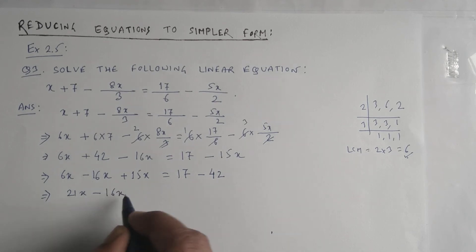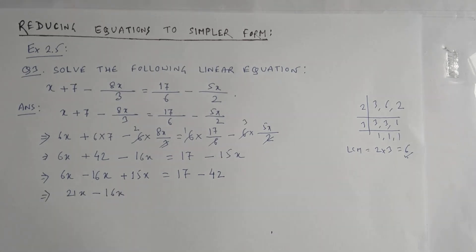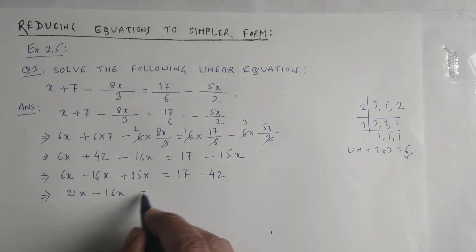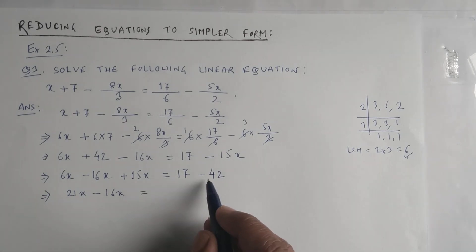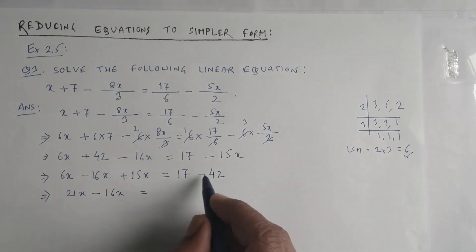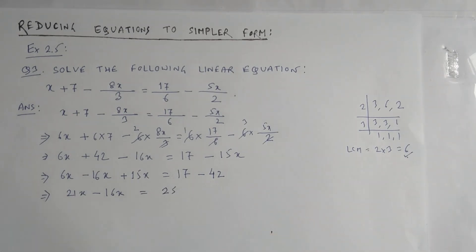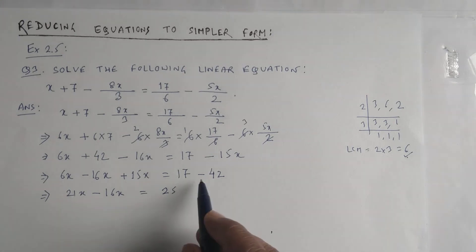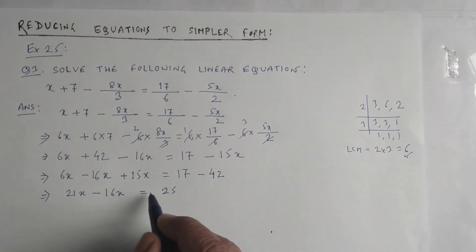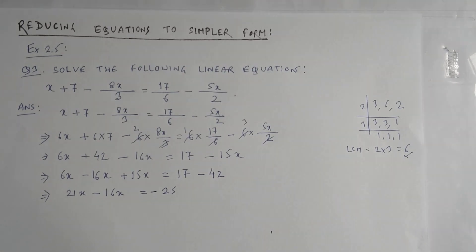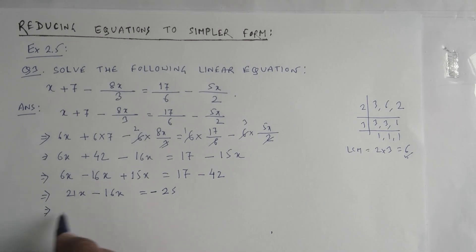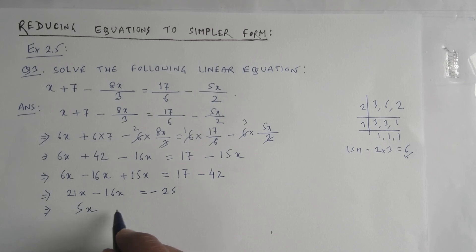Now combining: 6x plus 15x gives 21x, minus 16x on the left side. On the right side, 42 minus 17 equals 25, and since 42 is the greater number with the negative sign, the result is minus 25. So 21x minus 16x equals minus 25, which gives us 5x equals minus 25.